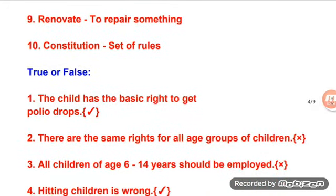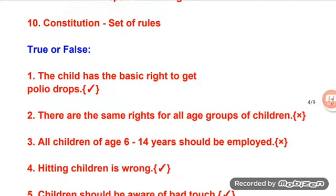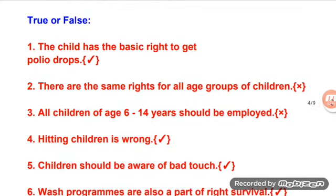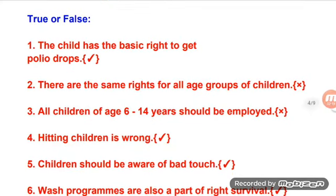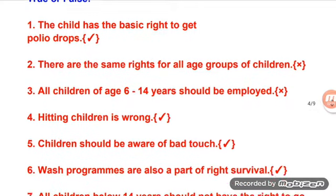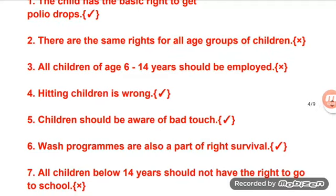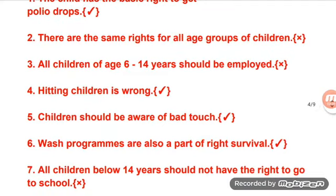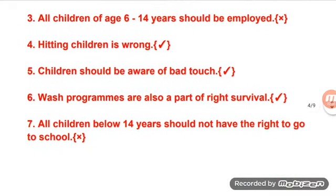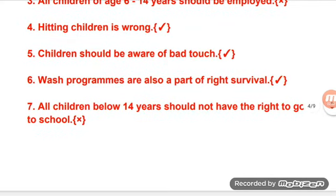True or False: The child has the basic right to get polio drops — True. There are the same rights for all age groups of children — False. All children of age 6 to 14 years should be employed — False. Hitting children is wrong — True. Children should be aware of bad touch — True.